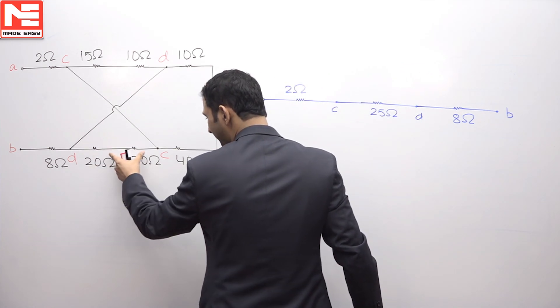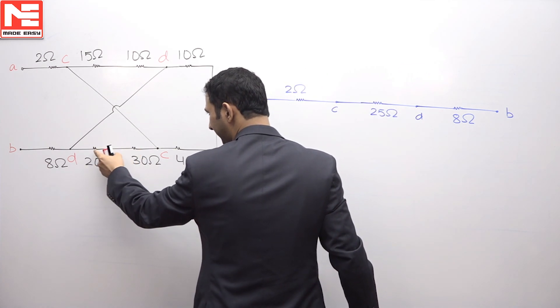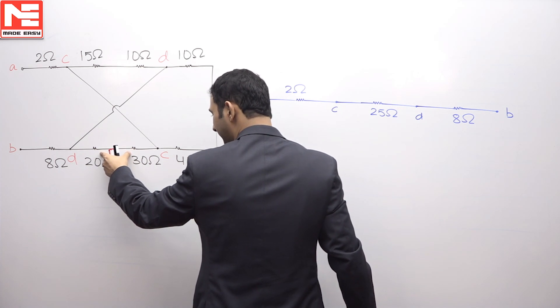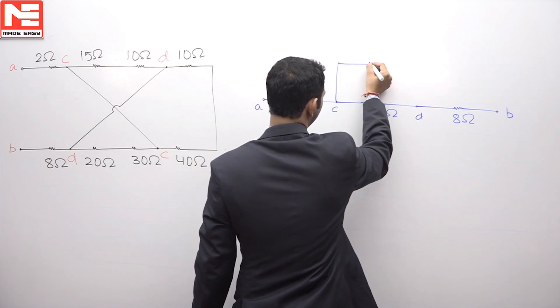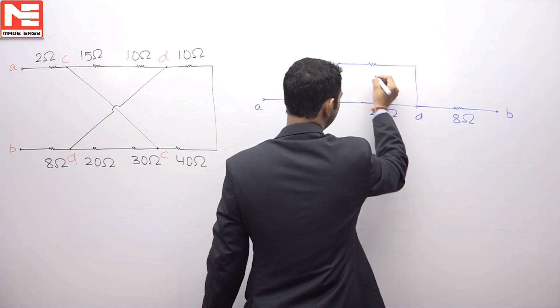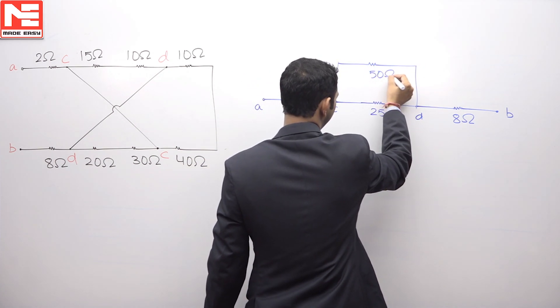Now if you see this point, these two resistances are connected in series, that is 20 plus 30, that is 50, and this 50 is further connected between C and D. That is between C and D, 50 ohm is connected.